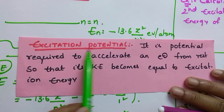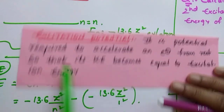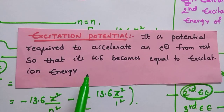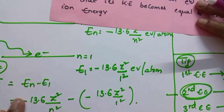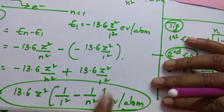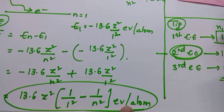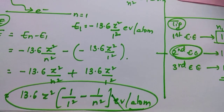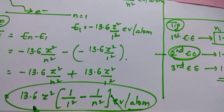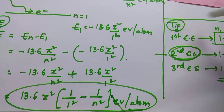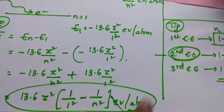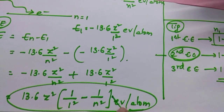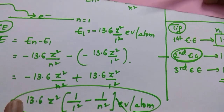One more topic remains — excitation potential. It is the potential required to accelerate an electron from rest so that its kinetic energy becomes equal to the excitation energy. Simply put, whatever answer you get from the excitation energy formula, that same value in volts is the excitation potential. In exam options, both volts and electron volts will be given. If the question asks for excitation potential, tick the volts option. If it asks for excitation energy, tick the electron volt per atom option. Thanks for watching.